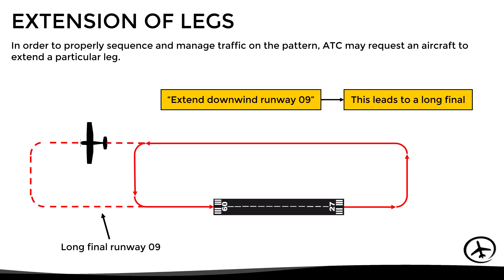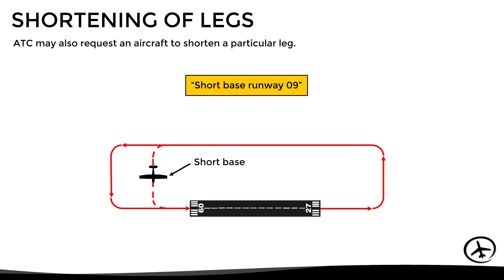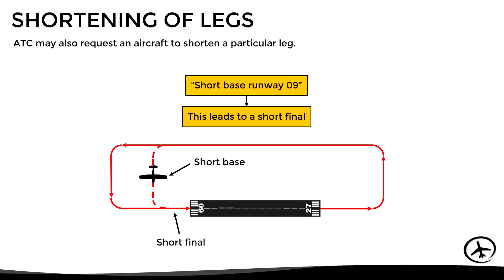Another example is the extension of the departure leg, which implies flying on runway heading for a longer distance and then eventually turning for crosswind. In the same way that we can extend a leg, we can also shorten it. The most common procedure is to make a short base, which implies turning to base earlier than normal, leading to a shorter-than-normal final as well.